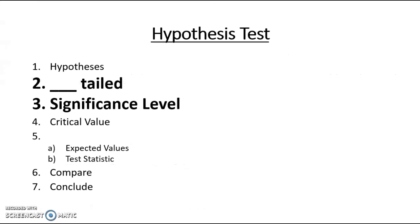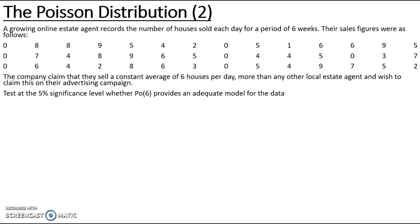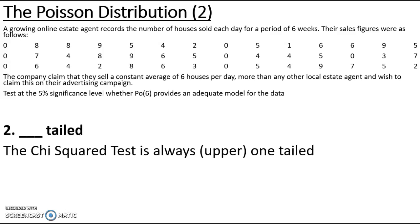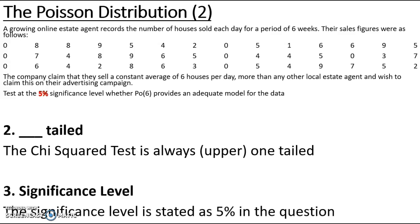Then we need to look at whether it is one or two tailed and the significance level. Using the chi-squared test it is always one tailed and we use the upper 0.95 percentage point. In the question it is stated that this is a 5% significance level.